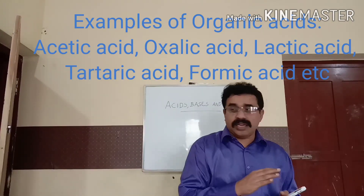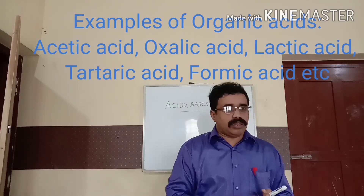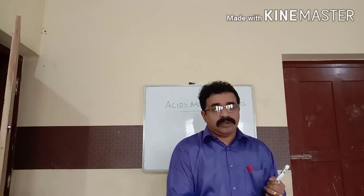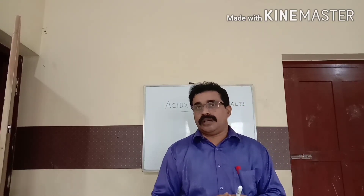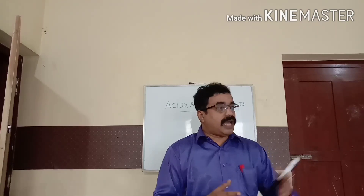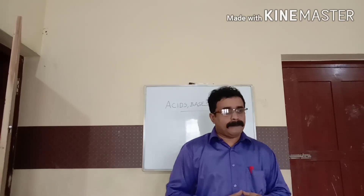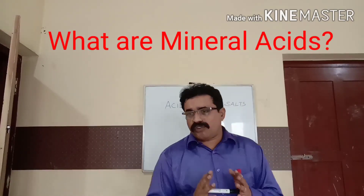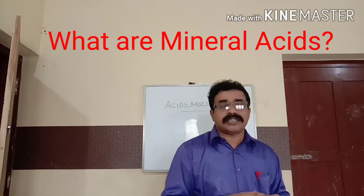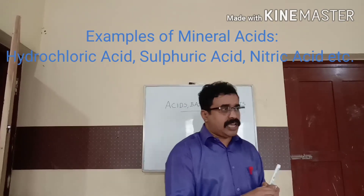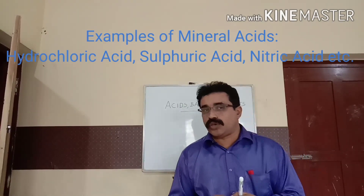Formic acid is also found in honey and similar substances. Also tartaric acid in tamarind, acetic acid in vinegar, and citric acid in citrus fruits like lemon. These are examples of organic acids. Mineral acids are derived from minerals and are also known as inorganic acids. Examples are hydrochloric acid (HCl), nitric acid (HNO3), and sulfuric acid (H2SO4).